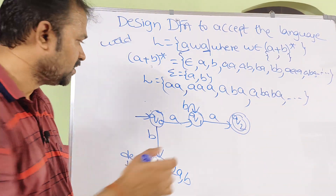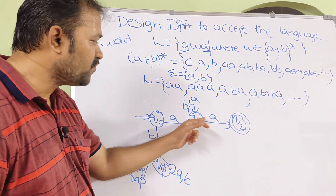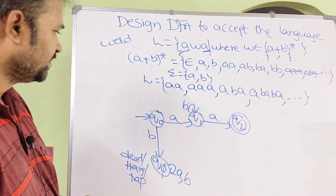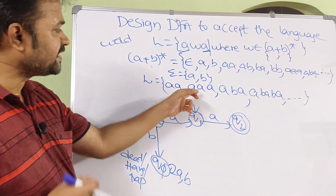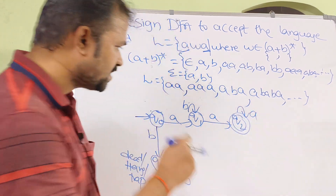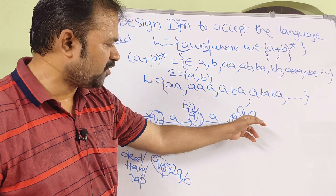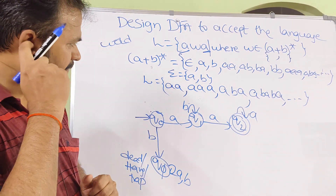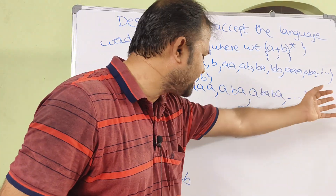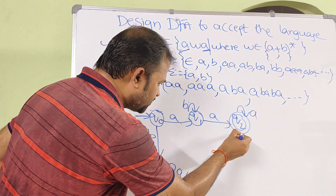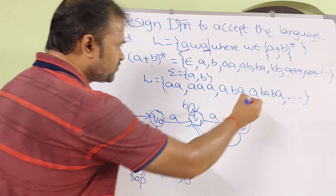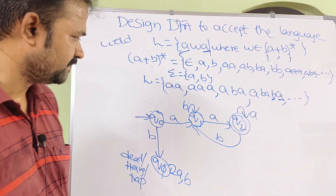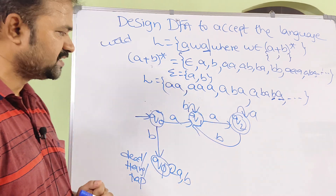Now we apply B on Q1. Since strings can have any number of B's between the two A's, Q1 on B stays at Q1. On Q2, every string must end with A, so we apply a self-loop on A — the string remains ending with A and is accepted. If we apply B on Q2, we go back to Q1, because after a B there may still be an A to end the string, and Q1 handles any number of A's and B's.